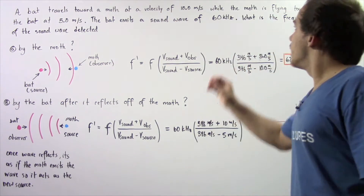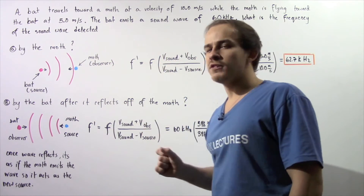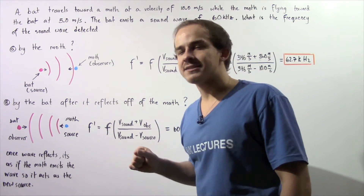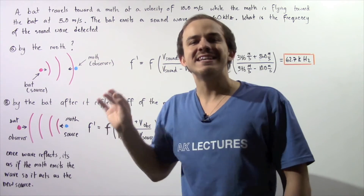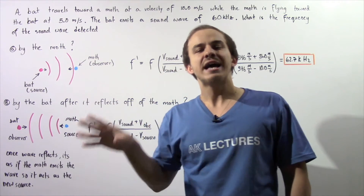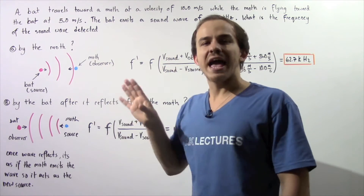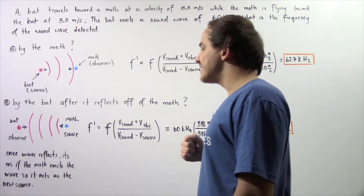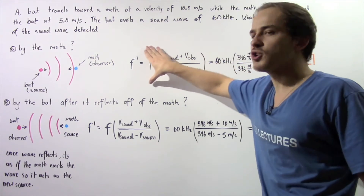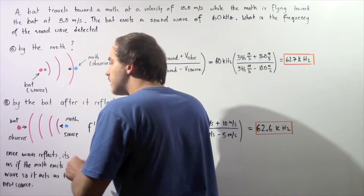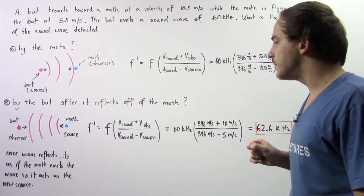Now for part B: what is the frequency of the sound wave detected by the bat after it reflects off of the moth and travels back to the bat? Once the wave reflects off of the moth, it is as if the moth is actually emitting that sound wave. So we now treat the bat as the observer and the moth as the source. We still use the same equation with a positive numerator and negative denominator since the two objects are still traveling toward one another.